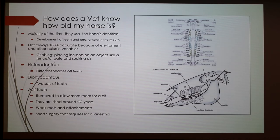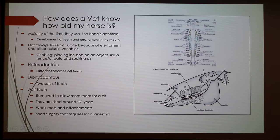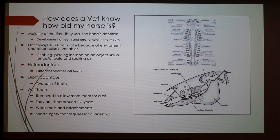But what happens if we don't have those registration papers? That's when we would use dental structures, or dentition — the development of teeth and the arrangement of the mouth. Horses are not like us in that all our teeth are in a row; they have gaps and spaces in between. The problem with using dentition to tell age is that horses that do activities like cribbing will mess up their teeth and throw off an accurate age. Cribbing is when they place their incisors on an object like a fence or gate and suck in air.